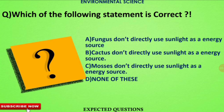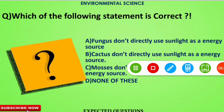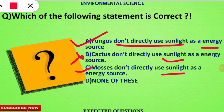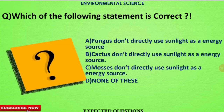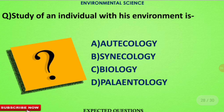The next question asks which of the following statements is correct. The correct answer is option A — fungus does not directly use sunlight as an energy source. The statement that cactus does not directly use sunlight is wrong because cacti are dependent on sunlight. Similarly, mosses are also directly dependent on sunlight for energy.